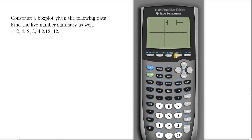To find the five number summary, all you do is press the TRACE button. There's your median, that's Q2. Use the arrow keys to navigate: all the way to the left, your min is 1, Q1 is 2, Q2 (the median) is 3, Q3 is 8, and the maximum is 12. That's it — I hope this video has been helpful.